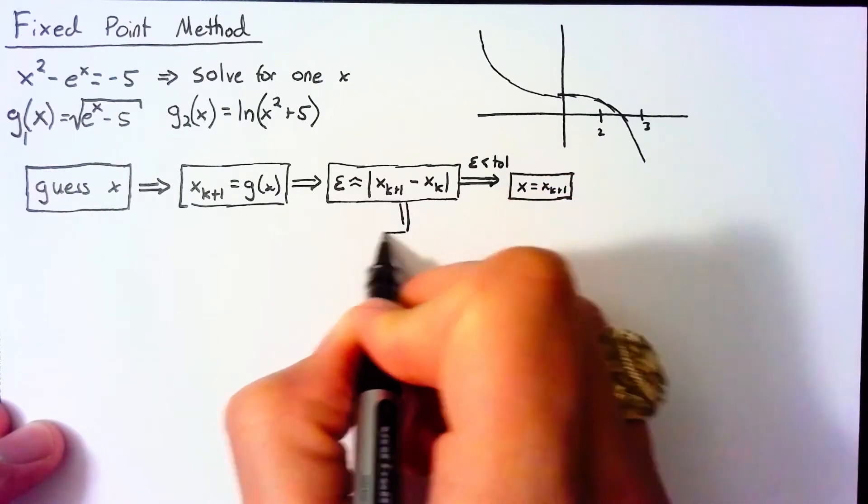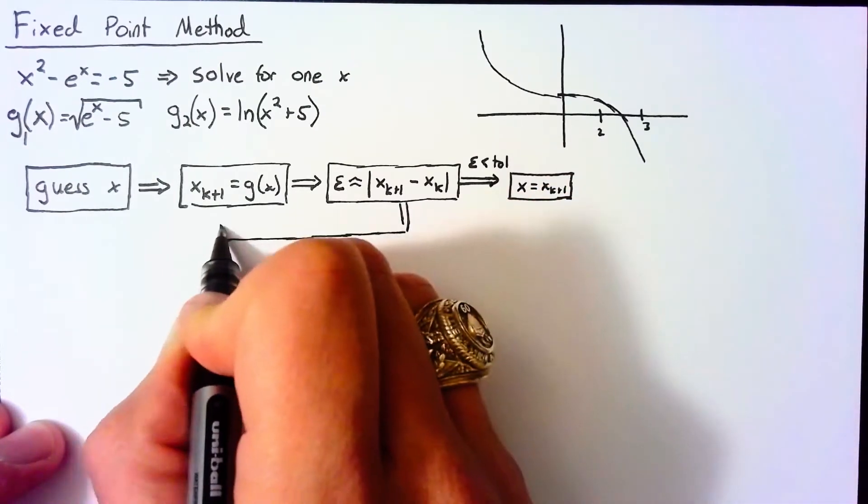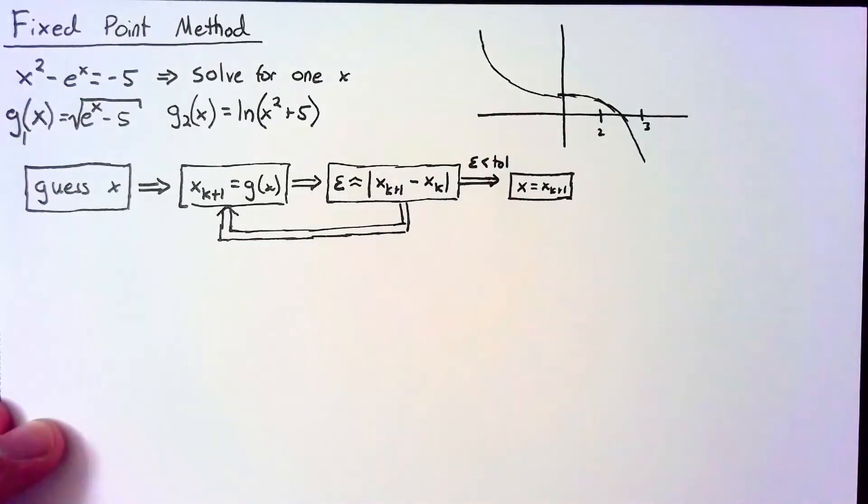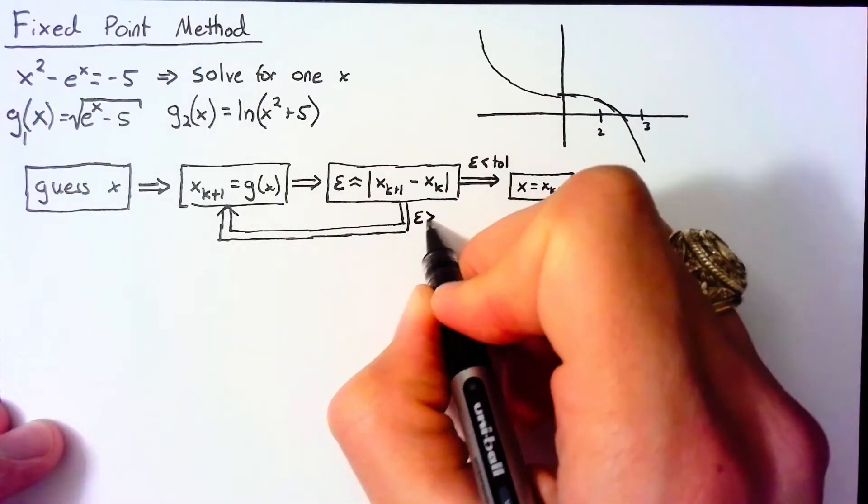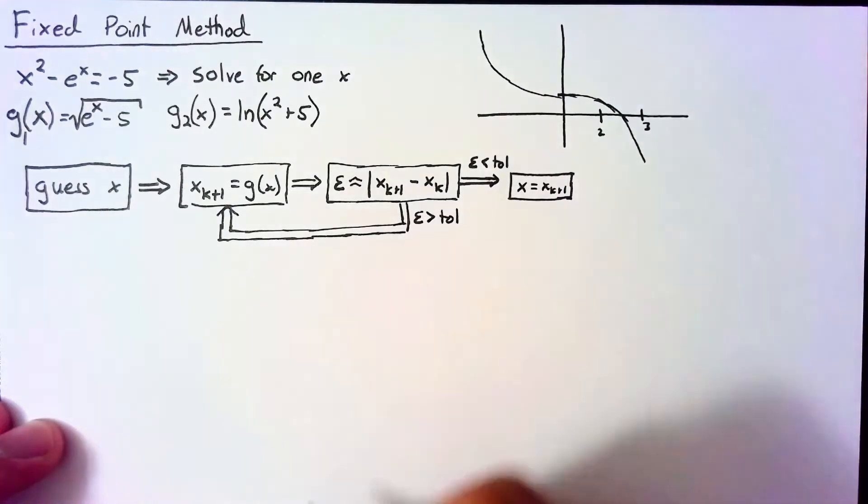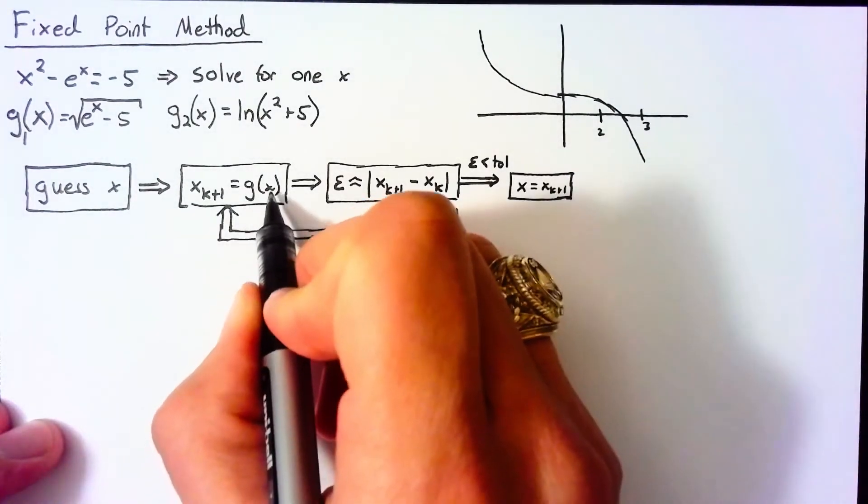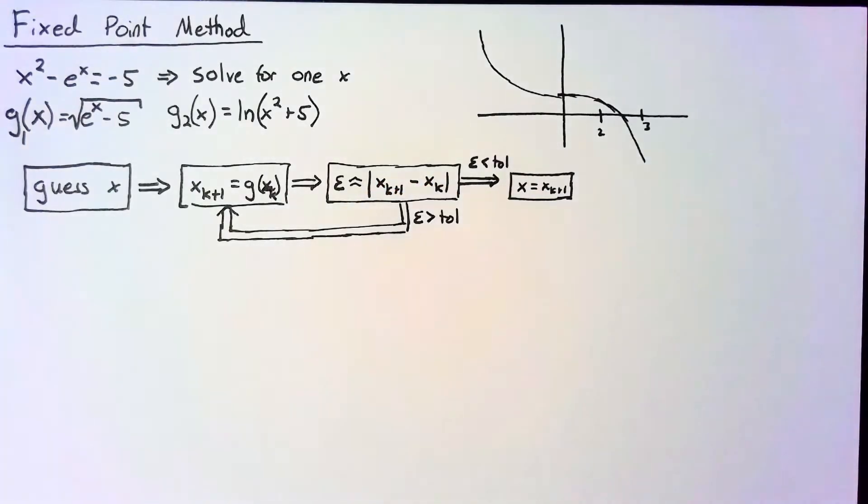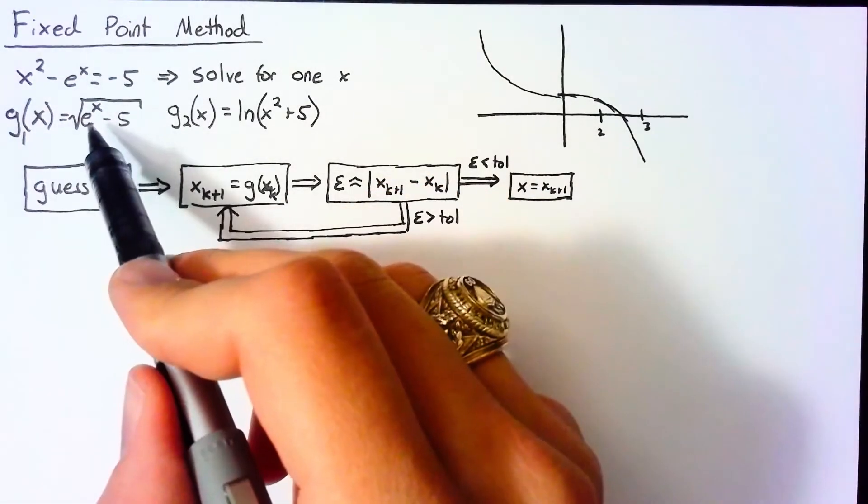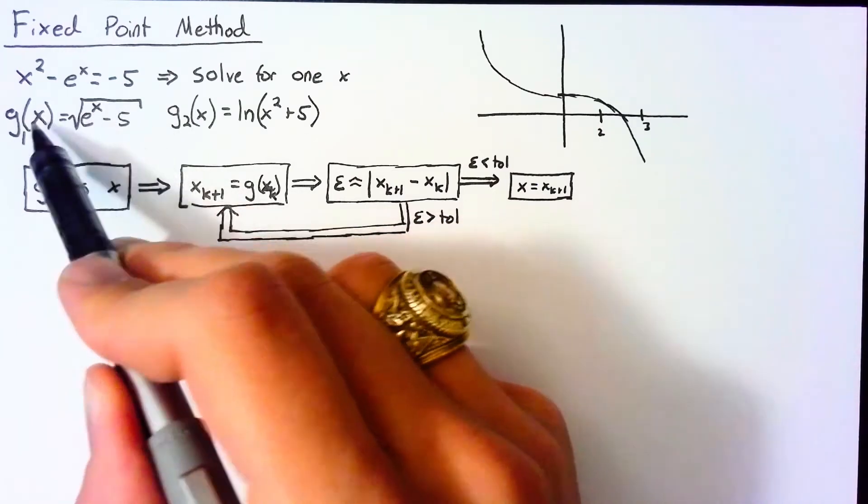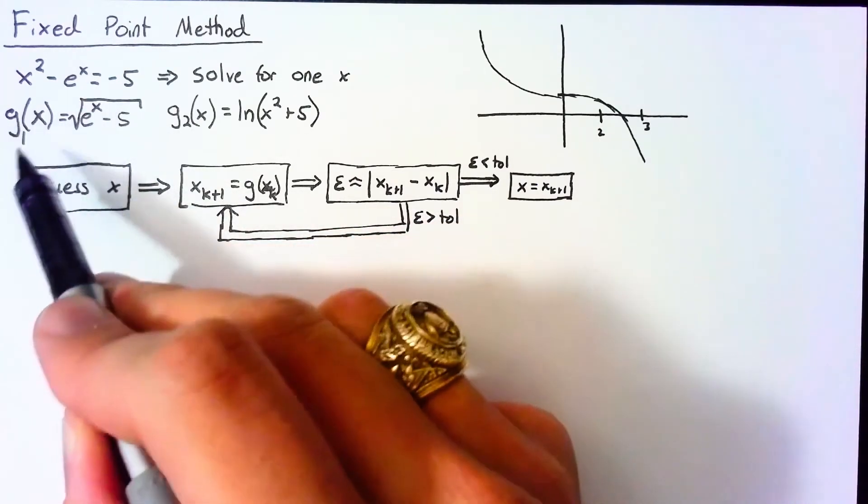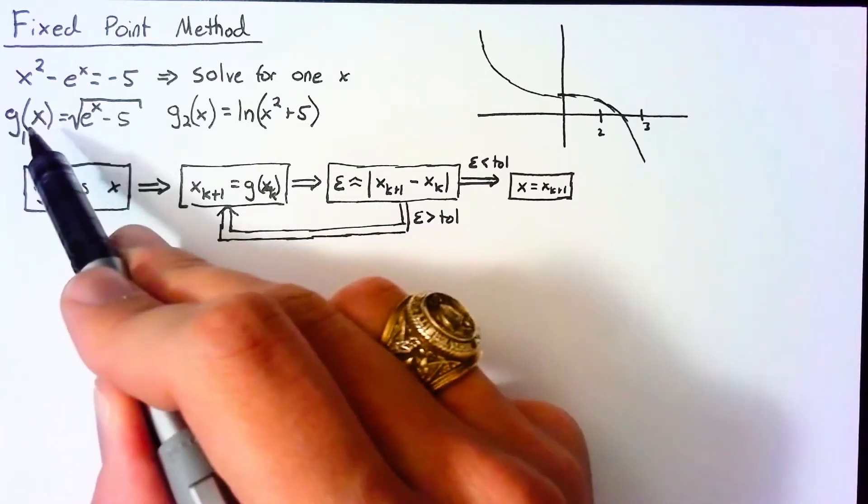In that case, we just set our final solution of x to this x_(k+1), our most recent guess. And if our epsilon is greater than our tolerance, then all we need to do is head back to our evaluation step and plug our x_k into our g again.